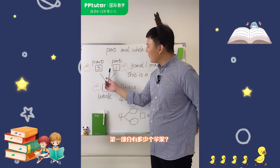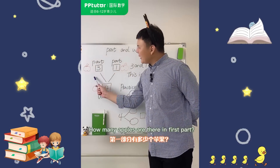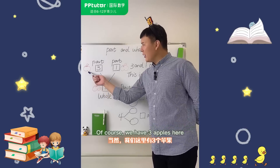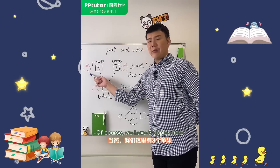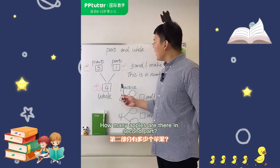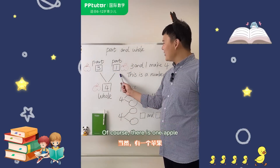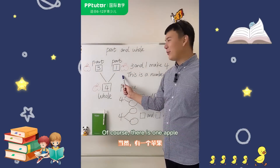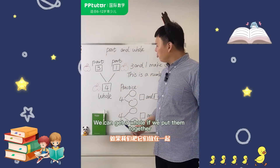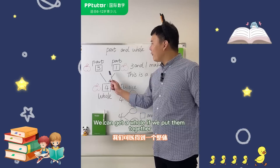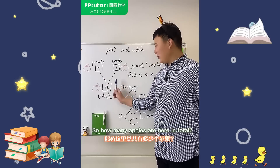Here is a question. How many apples are there in the first part? We have three apples here. How many apples are there in the second part? There is one apple. We can get the whole if we put them together.